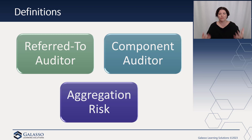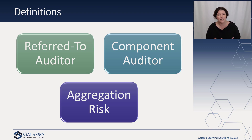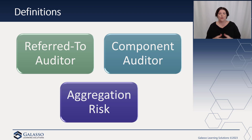This distinction was very important when determining the quality management standards as to who was part of the engagement team. They needed to differentiate between these different types of people who are assisting us, and so they had to revise the definition of a component auditor to reflect the changes in SAS 146, which revised the term 'engagement team' to include component auditors. The new definition of a component auditor is an auditor who performs audit work related to a component for purposes of the group audit, and a component auditor is part of the engagement team for a group audit.